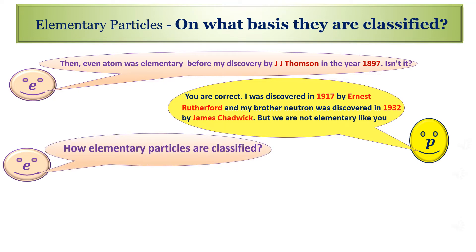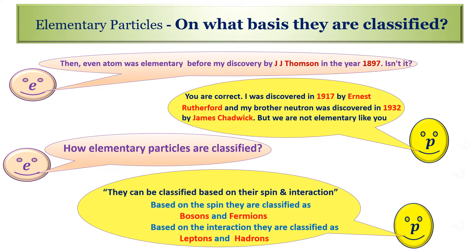How elementary particles are classified? They can be classified based on their spin and interaction. Based on the spin they are classified as bosons and fermions. Based on the interaction they are classified as leptons and hadrons.